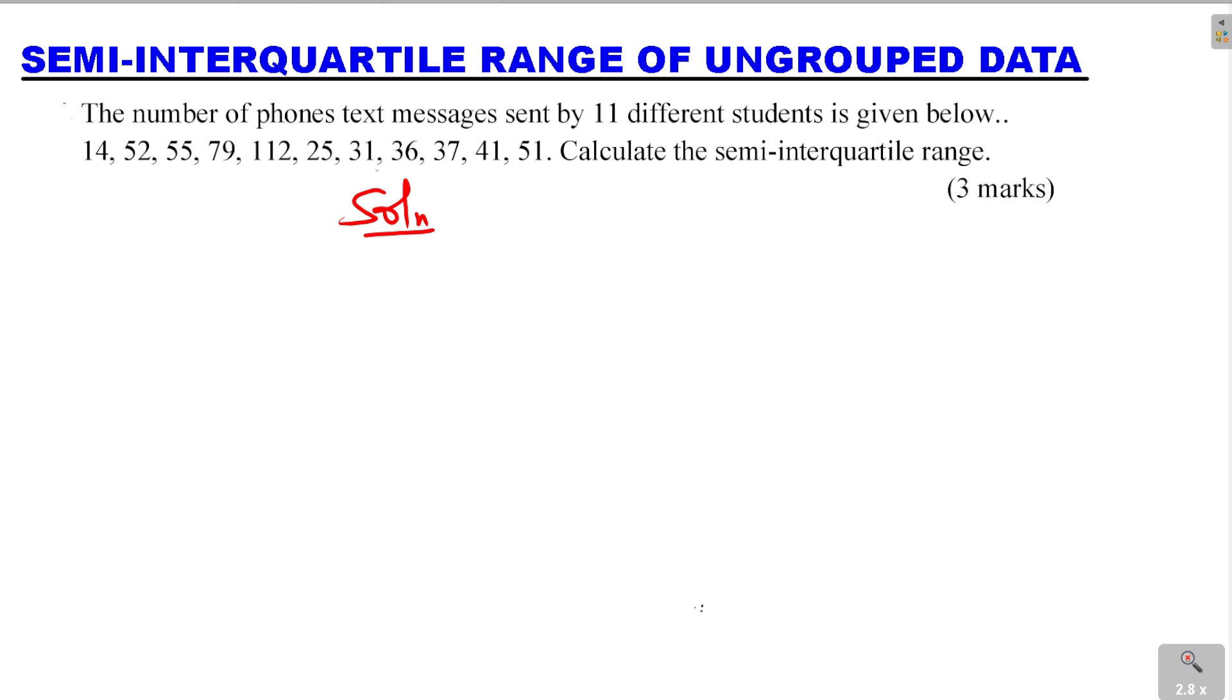The smallest is 14, followed by 25, 31, 36, 37, 41, 51, 52, 55, 79, and the last one is 112. We have arranged the values from the smallest to the largest.